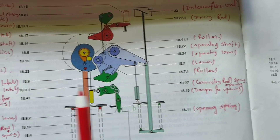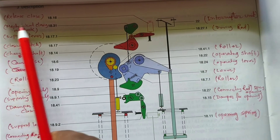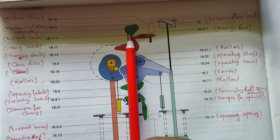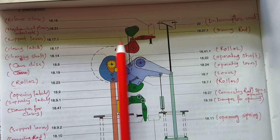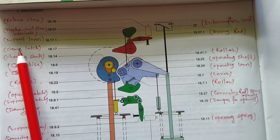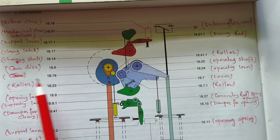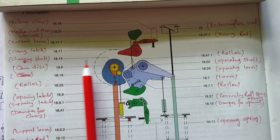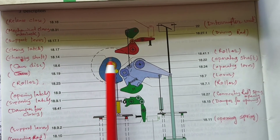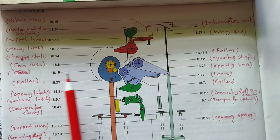Let's discuss about the closing part. This is the release close, this is the mechanical closing interlock supporting lever. This is the closing latch. This is the charging shaft. This is the cam disc — it is called the cam disc.